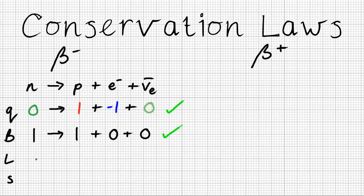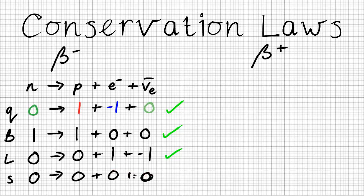Lepton number, this is not a lepton. Proton is not a lepton. This is a lepton. This is an anti-lepton. So therefore, zero leptons to begin with, zero leptons afterwards. The strange one this time, well, there's no strangers in any of these particles. So zero equals zero plus zero. Not that it would have to, because this is a weak interaction, but strangeness has been conserved in this case.